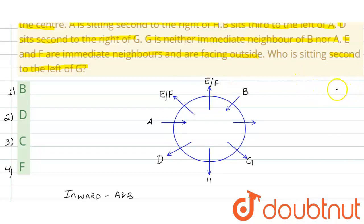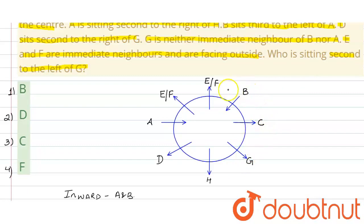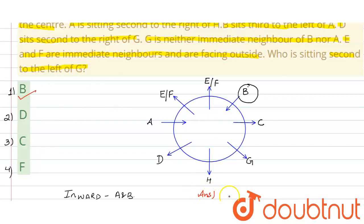Now, the question is: who is sitting second to the left of G? Jo last person jo bacha hua hai, wo hai C - wo is last position pe baitha hua hai. Ab question ki taraf aate hain: G ke left mein second position pe C, B, E, F hain. First position, second position - to G ke second left position pe jo baitha hua hai, wo hai B. So, according to the question, jo hamara correct answer hai, wo hai option 1 - B. B is sitting second to the left of G.